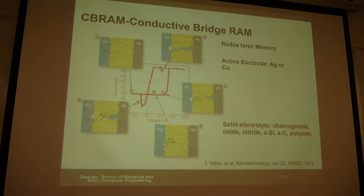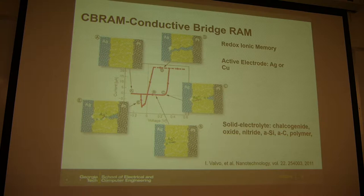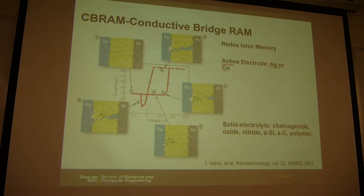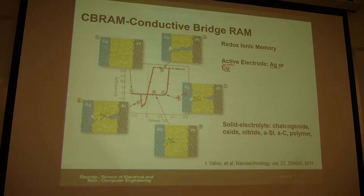The other category is CB-RRAM, conductive bridge random access memory. It's also a two-terminal device with three layers: two electrodes and one insulator, sometimes called a solid electrolyte. The key difference is that one of the electrodes needs to be active — typically silver or copper.